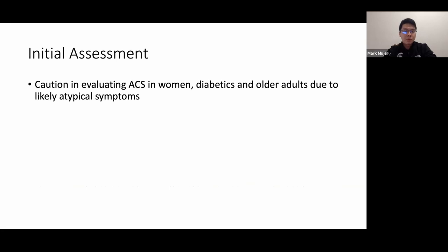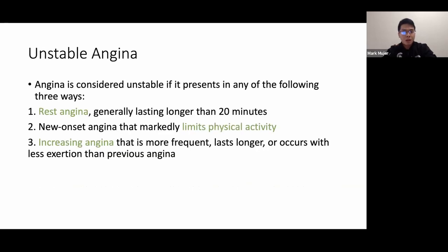When evaluating for ACS using typical, atypical, and non-cardiac chest pain categories, exercise caution in women, diabetics, and older adults, because these patients are likely to present with atypical symptoms. Unstable angina is defined as rest angina lasting longer than 20 minutes, angina that limits physical activity, or an increase in angina from the patient's baseline — whether more frequent, longer duration, or occurring with less exertion.